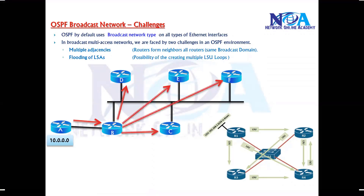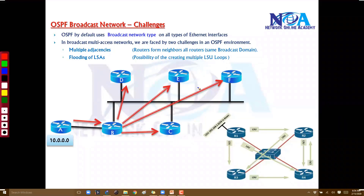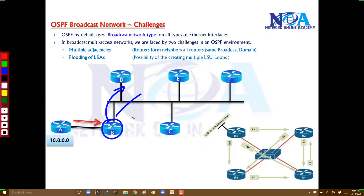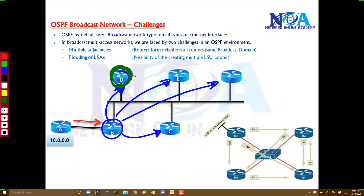Router B receives an update and says 'I got an update, I'm going to pass this information to all my neighbors,' because everyone is on the same broadcast domain. Then router D receives the update and says 'I got an update from router B, and my job is to update every other router,' so router D passes the update to every other neighbor.